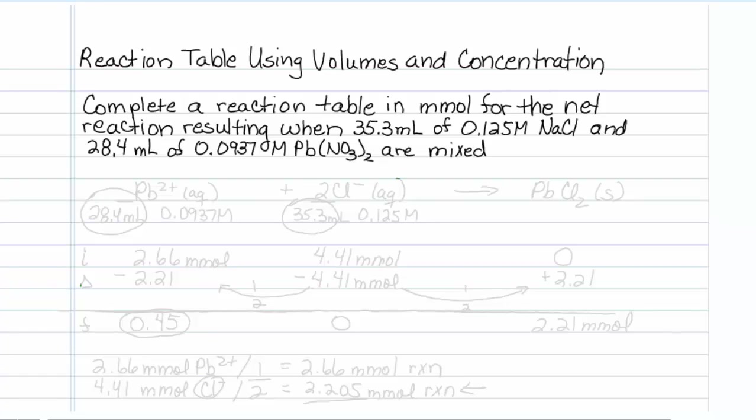In order to do the reaction table, we actually have to know what reaction occurs, and hopefully from Chem 101 you remember that when you mix solutions of lead 2 plus aqueous and Cl minus aqueous, you will get lead chloride as a solid. So I'll put 2 in front of the Cl.